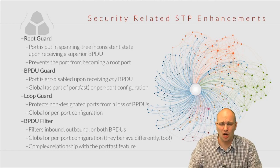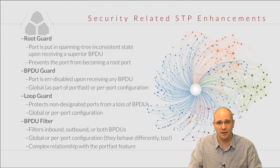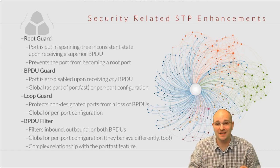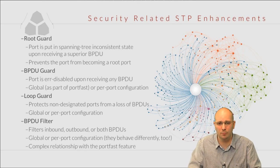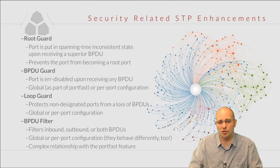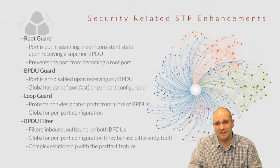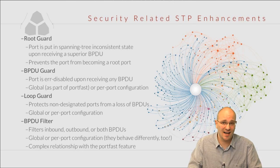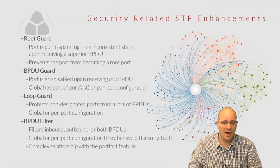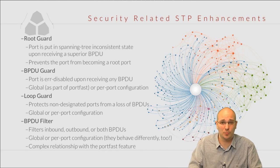The loop guard is a feature that is designed to protect non-designated ports — and here we usually mean the blocking ports, not the root ports — from a sudden loss of BPDUs. If a port that is in a blocking state stops receiving BPDUs, it will eventually move into forwarding state. If the BPDUs are being dropped due to misconfiguration on the switch on the other side of that port, we may end up having a bridging loop, which is dangerous. This is why loop guard is going to put the port in a loop inconsistent state if it stops receiving BPDUs.